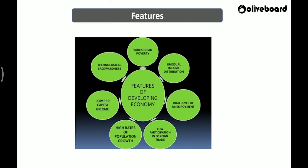The fourth feature is low participation in foreign trade. This is because of low industrialization and technological backwardness. Our participation in foreign trade — meaning exports and going global — is limited. If we take India as an example, our products could not compete with global products earlier. We are always in a trade deficit, with exports very less compared to imports. We cannot compete with products from developed nations because they are technologically very strong and we are technologically backward.